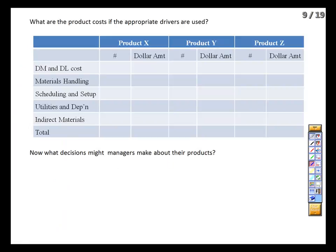We're shifting away from direct labor, and now allocating most of our costs based on direct materials and machine hours. With this in mind, let's take another look at what it's going to cost us to produce this stuff, now that we've got a new set of cost drivers.